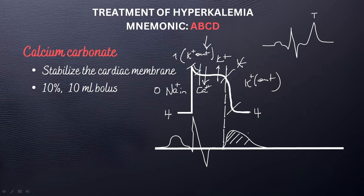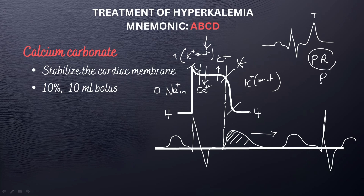As it progresses, it leads to changes in the P wave. You can have a prolonged PR interval, or even absence of the P wave. It's easy to remember by understanding that it starts from the T wave, then you proceed to the P wave — so you may have PR prolongation or absence of the P wave. Eventually this moves to the QRS complex, which may then become widened. And then it can lead to something called a sine wave, or ventricular fibrillation, and eventually asystole.